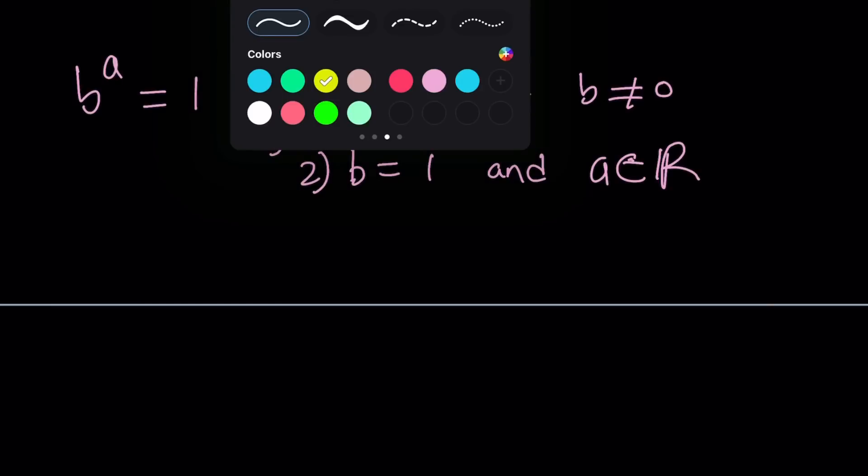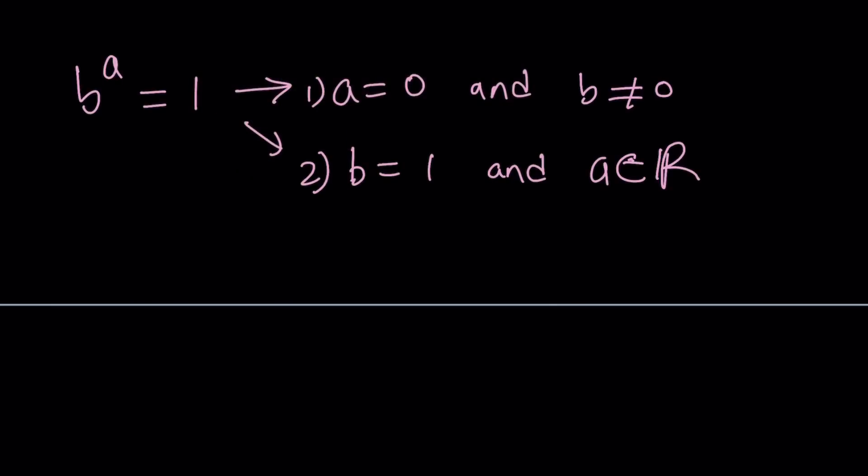The third case scenario here is going to be what? You can guess at this point. And if you said b is equal to negative 1 and a is an even integer, then you got it right. Because if you think about it, we have negative 1 to the power 2n. It's always 1. Again, we're talking about real numbers here. So those are the three cases.